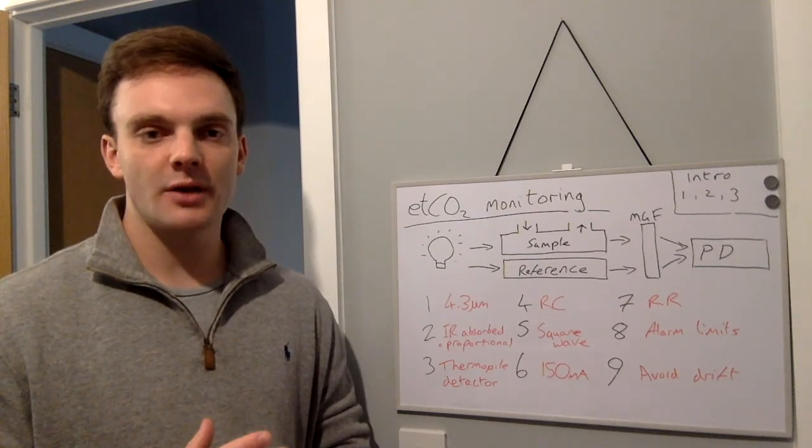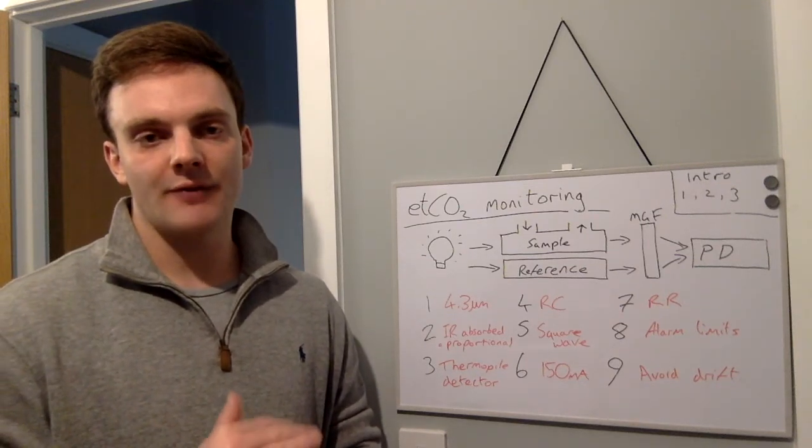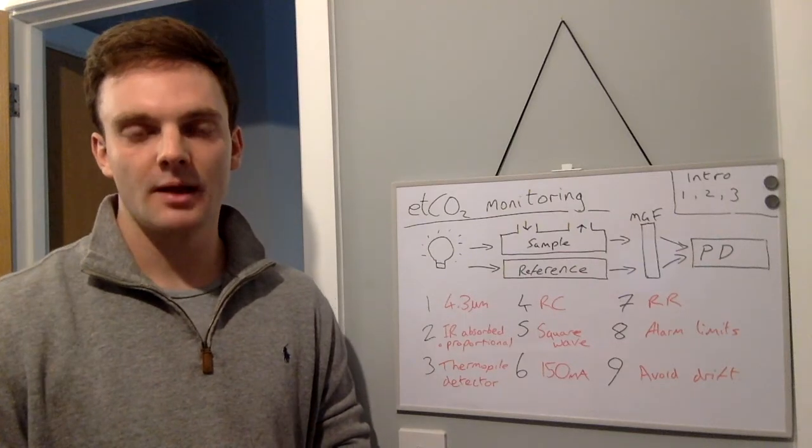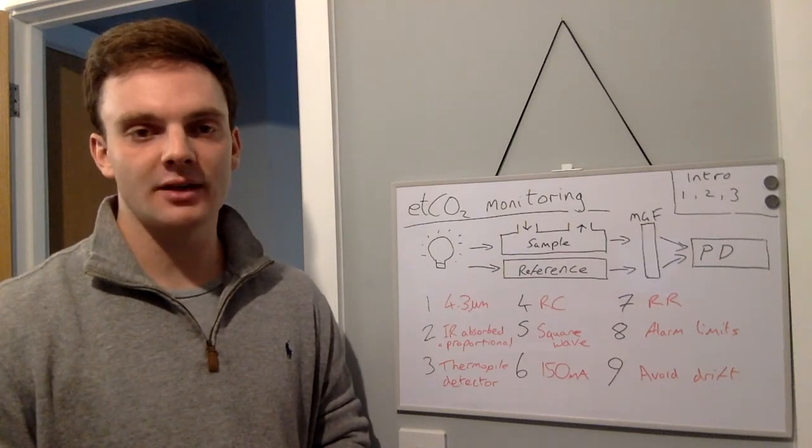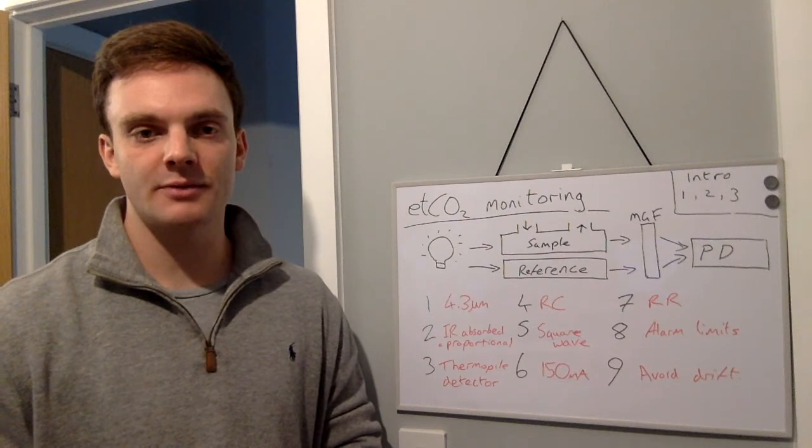The end tidal CO2 has a square waveform, and this is because of the inspiratory and expiratory phase of the respiratory cycle.